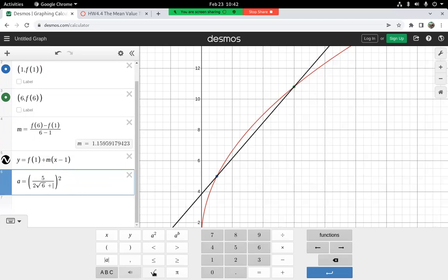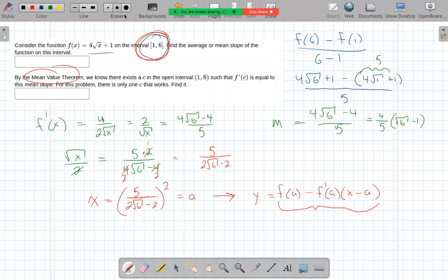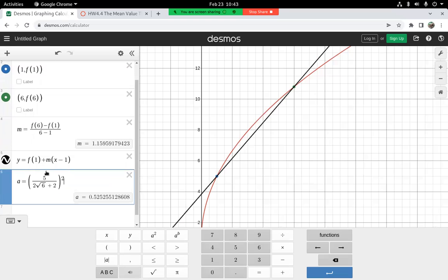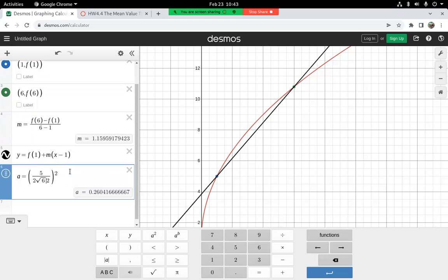And that fraction was 5 over 2 square root of 6. I think it was plus 2. Let's double check that. Minus 2.